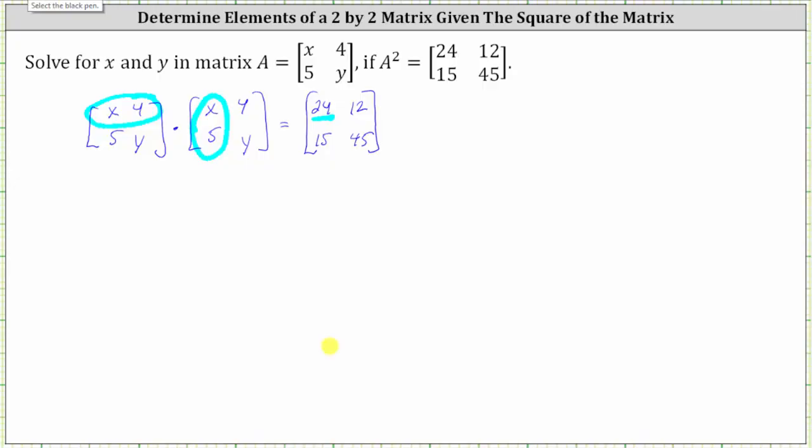So the element in row one, column one of the product is equal to x times x or x squared plus four times five, which is 20, which must equal 24.